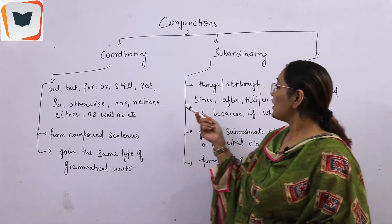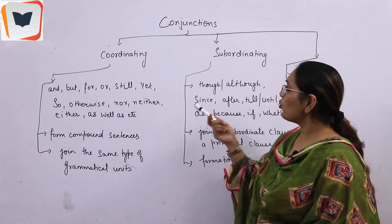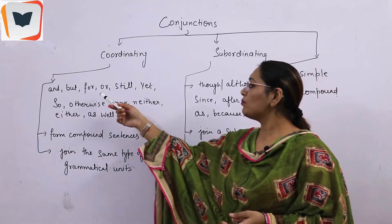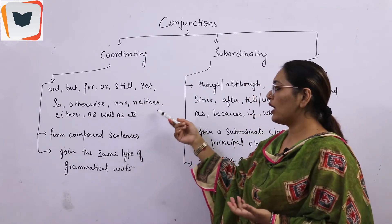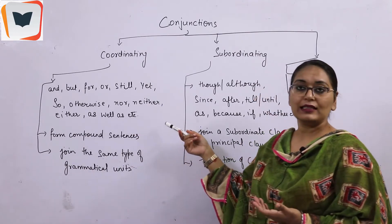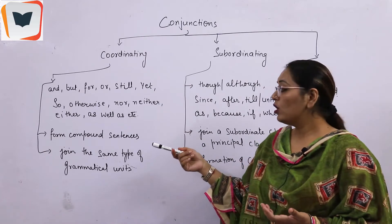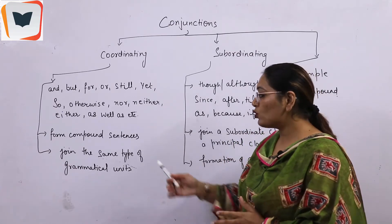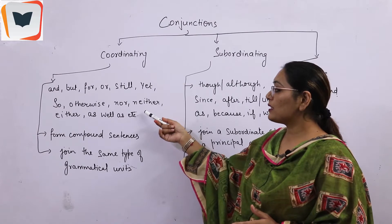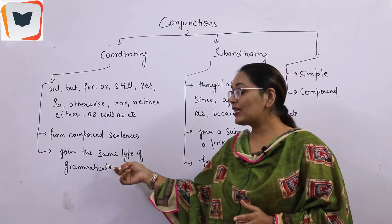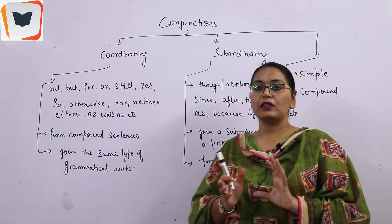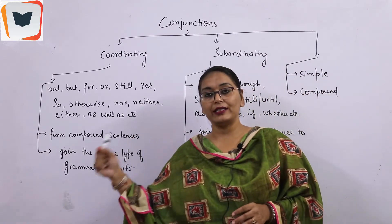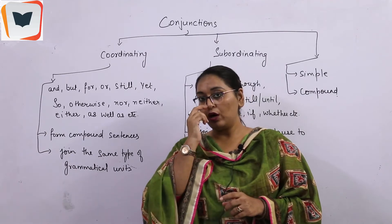If I look at the usage of grammar, we get two kinds of conjunctions: coordinating and subordinating. The coordinating conjunctions are: and, but, for, or, still, yet, so, otherwise, nor, neither, either, as, etc. These words join two clauses or sentences — to join different sentences, to join compound sentences, to join the same type of grammatical units, such as adjective and adjective, or to join a verb. That will be our conjunction.